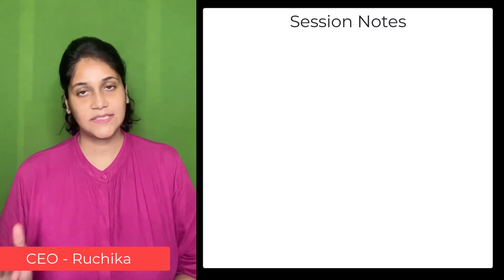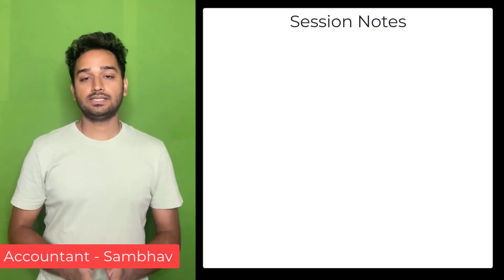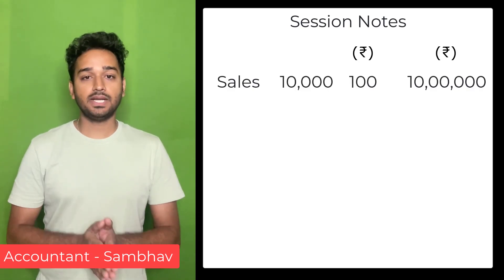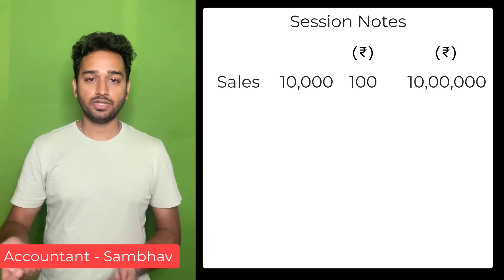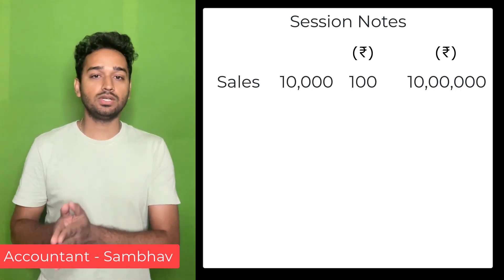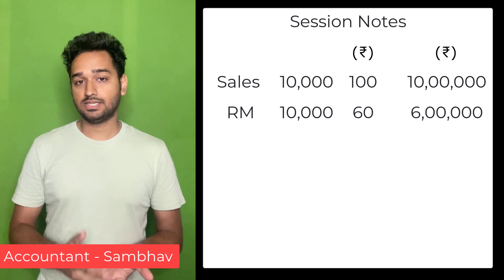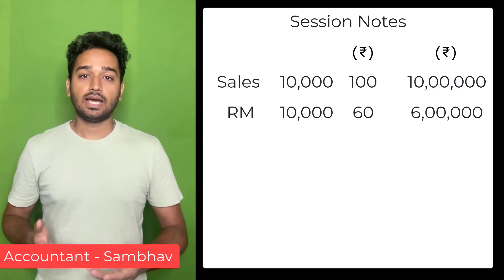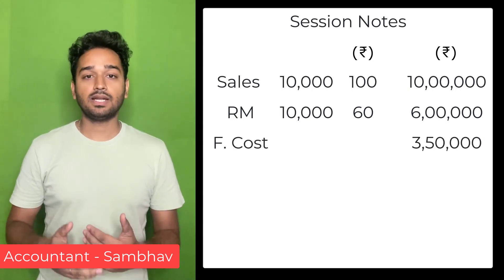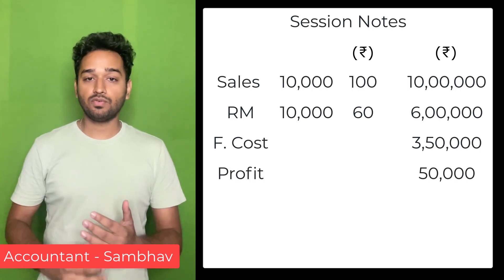So Sambhav, please briefly cover last year's financials. Our last year's financials were as follows: sales were 10,000 units at ₹100 per unit, giving total sales of ₹10 lakh. Against that, raw material cost was ₹60 per unit, coming to ₹6 lakh, and fixed cost was ₹3,50,000.